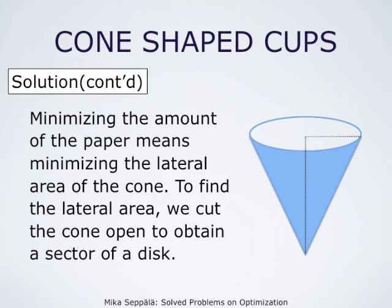Now, minimizing the amount of paper needed means minimizing the lateral area of the cone. To find the lateral area, we cut the cone open to obtain a sector of a disc.